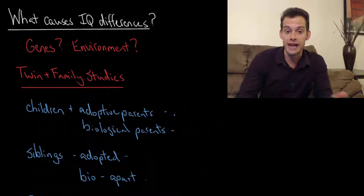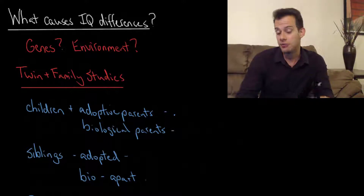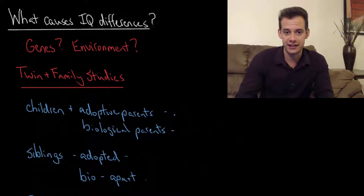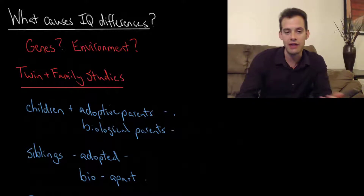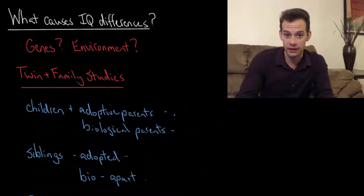This is the sort of nature versus nurture debate. And of course you probably already know that the answer is going to be that it's an interaction of genes and environment. We're not going to have a case that says people's differences in IQ are solely due to genes or solely due to environment, but rather that genes and environment interact in order to influence a person's intellectual development.